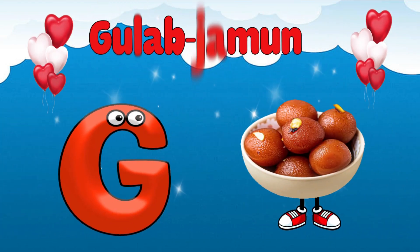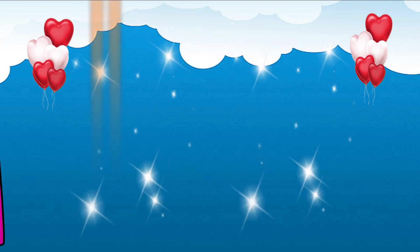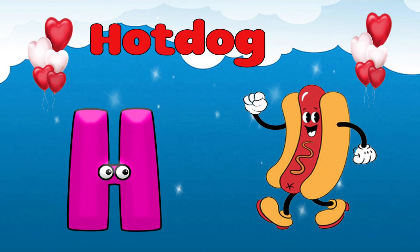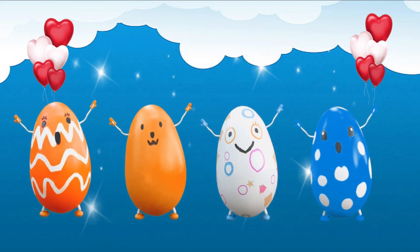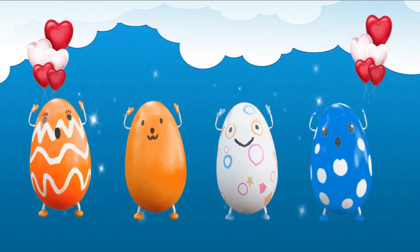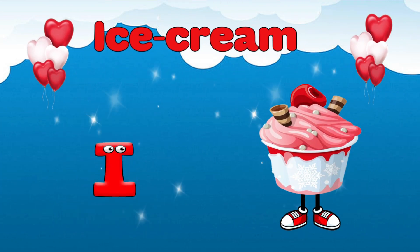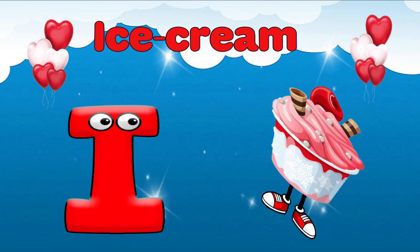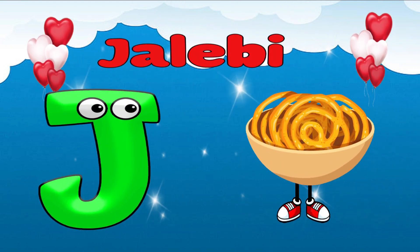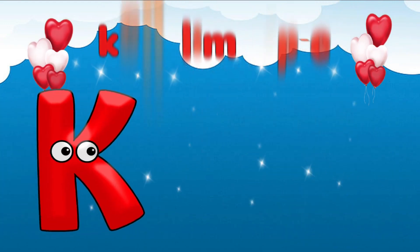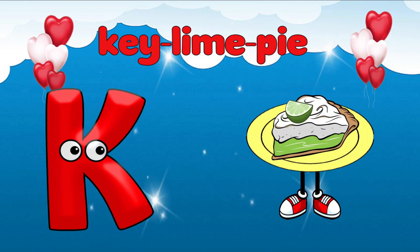G is for Gulab Jammin. G, G, Gulab Jammin. H is for Hot Dog. H, H, Hot Dog. I is for Ice Cream. I, I, Ice Cream. J is for Jelly Bean. J, J, Jelly Bean. K is for Key Lime Pie. K, K, Key Lime Pie.